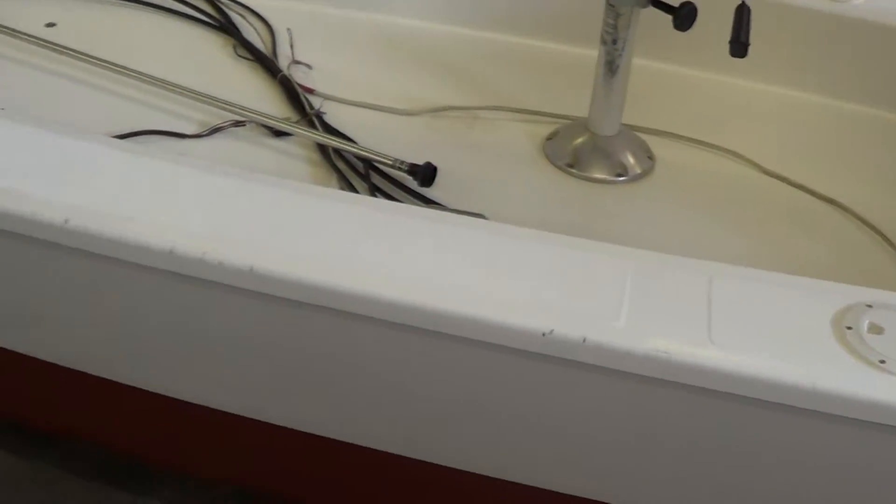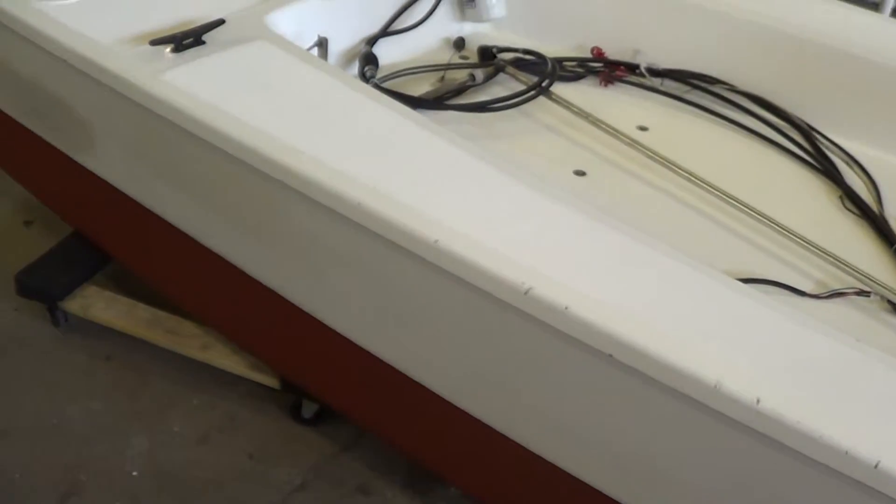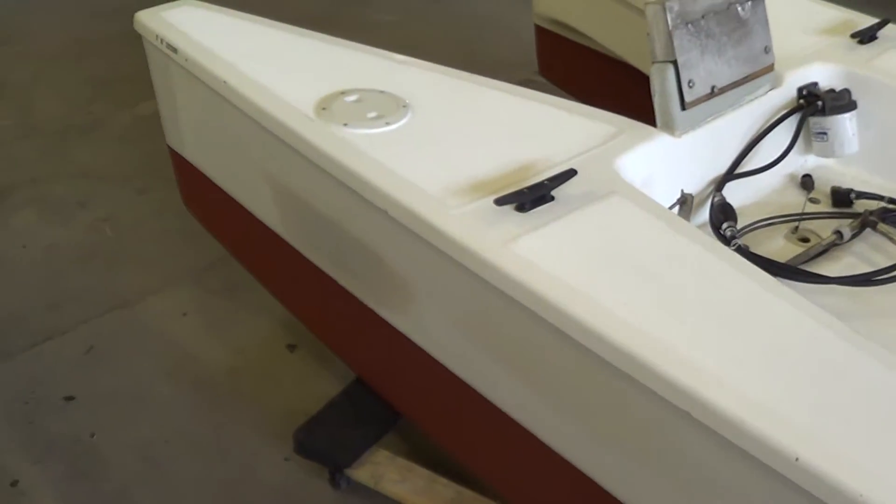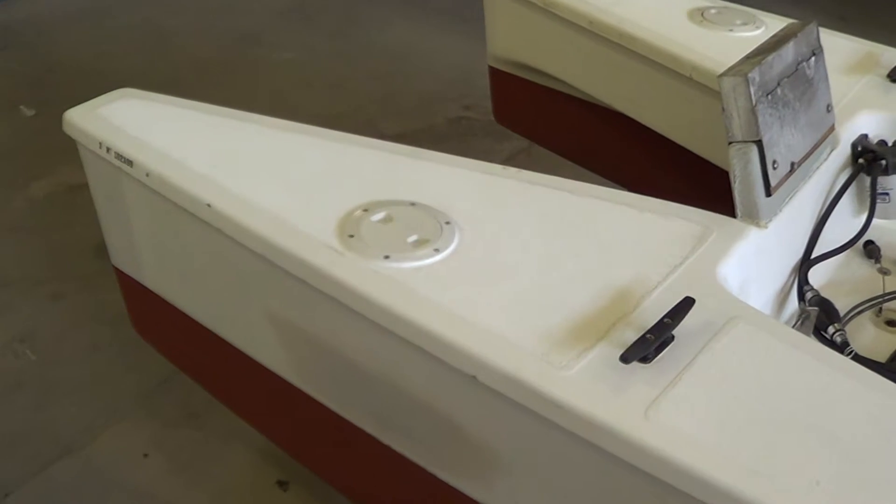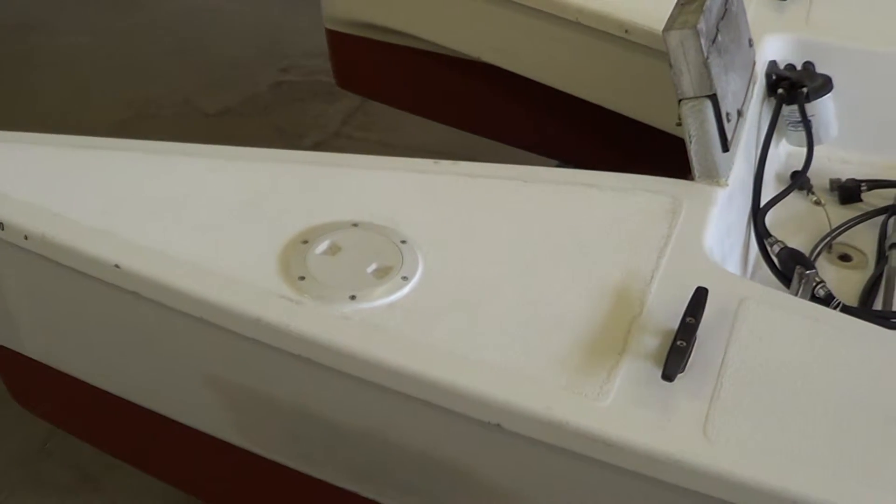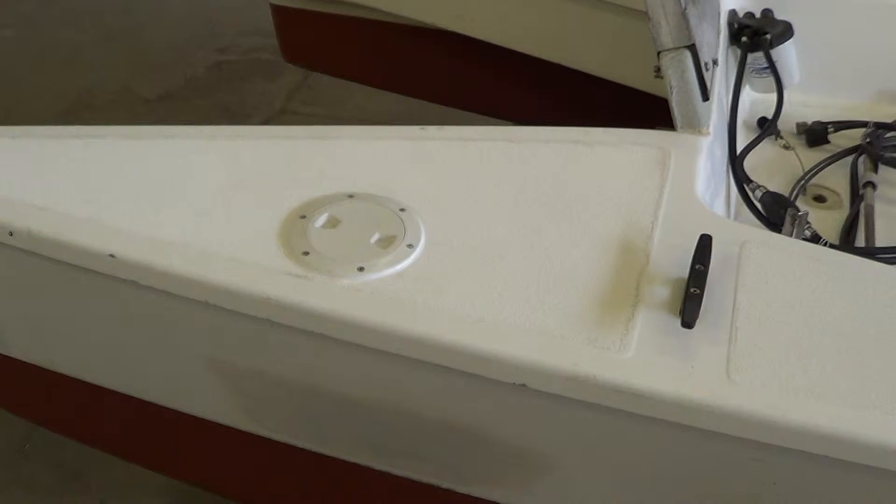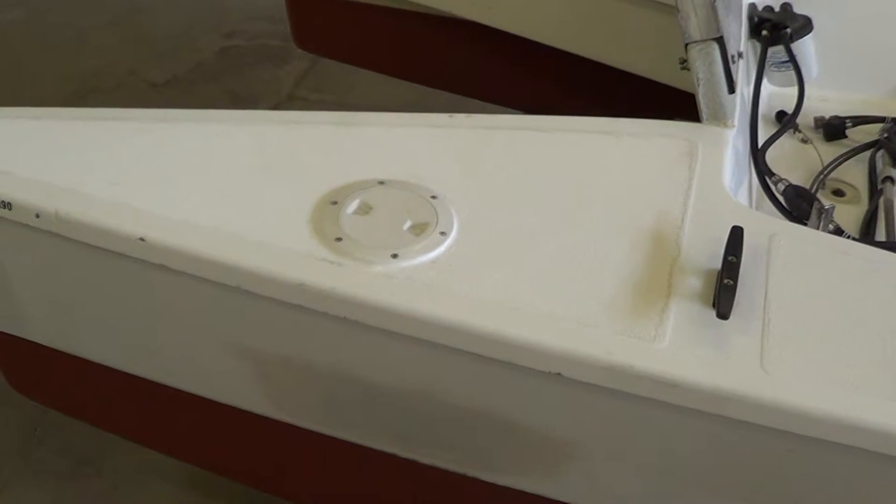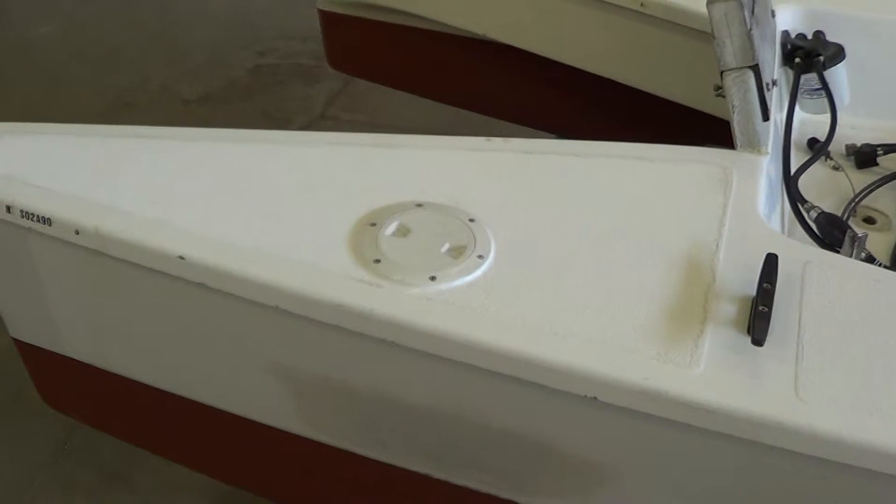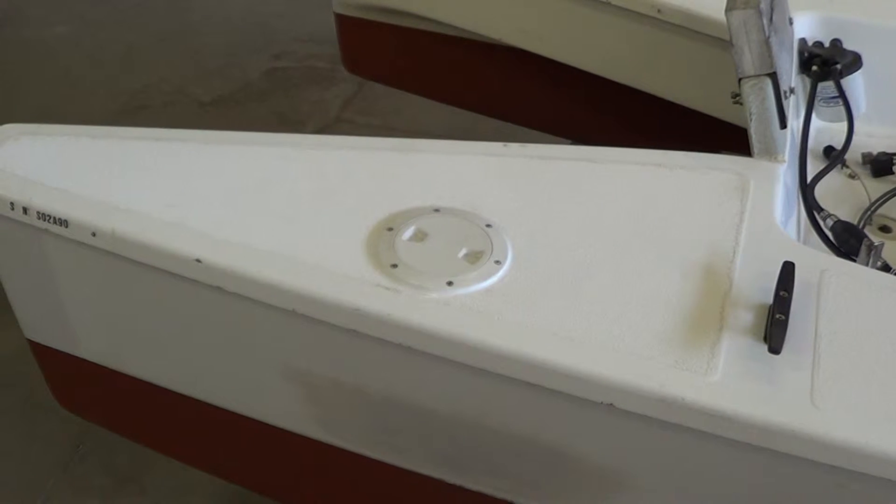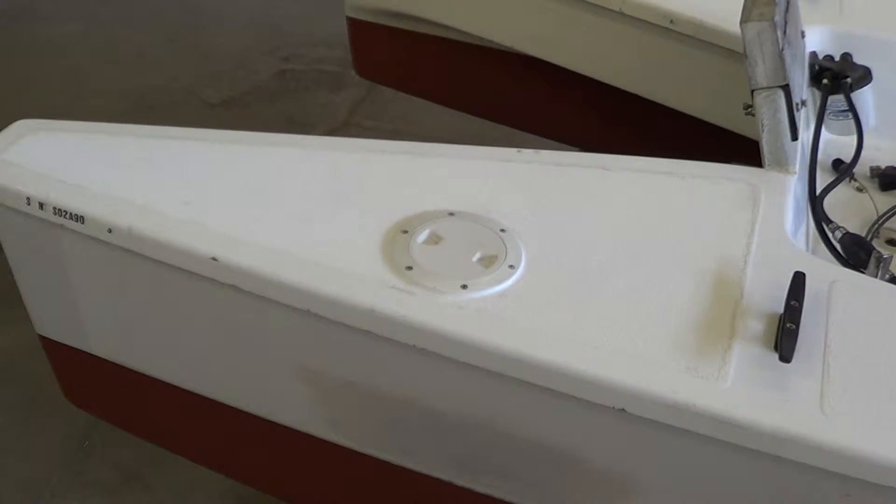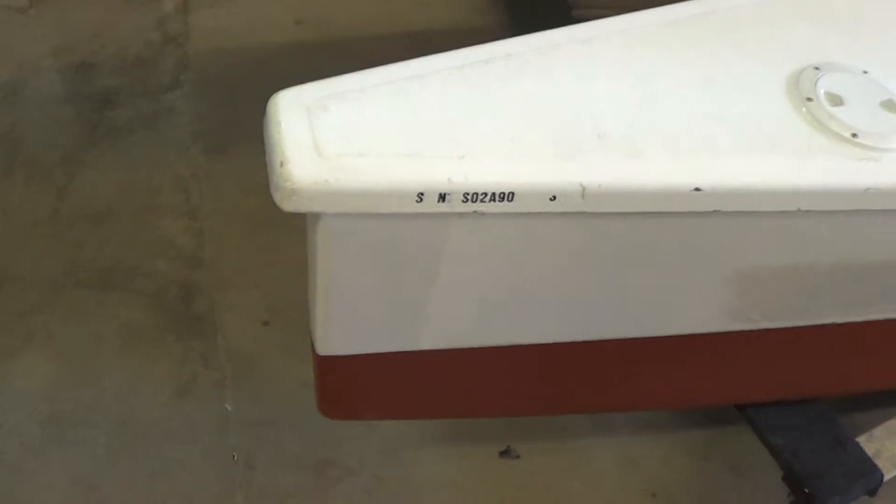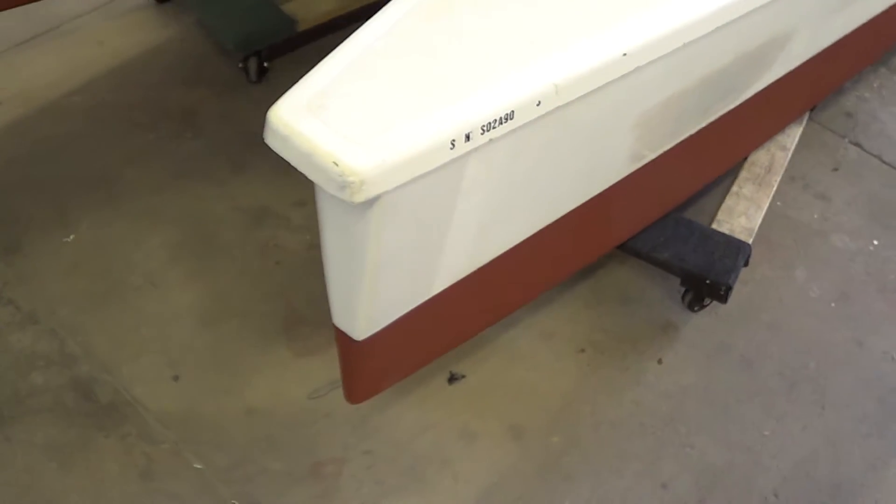We had a couple of repair spots on the bottom and had to do some fiberglass work. We also believe that a lot of the water gets into these pontoons from these inspection ports, so we put 5200 caulking around the four inspection ports and the cleats. We're hoping that this is going to alleviate the water intrusion.